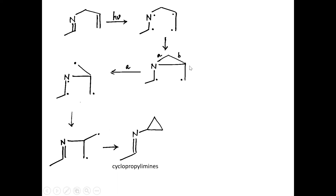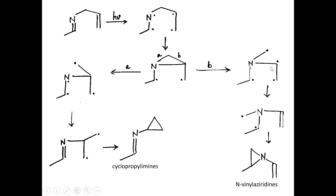If instead bond B is broken, you get two radicals — one here and one there. There will be formation of a double bond, and the remaining radicals make a bond to give N-vinyl aziridine — nitrogen containing a vinyl group. So the main points: 1-aza 1,4-diene in the presence of sensitizer gives cyclopropyl amine with nitrogen at first position. For 2-aza 1,4-diene you get two products: cyclopropyl amine and N-vinyl aziridine.